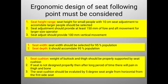Seat width should be selected on the basis of the 95th percentile population. Similarly, seat depth should also accommodate 95 percent of the population. The seat cushion is important for comfort — the weight of the buttock and thigh should be properly supported. The seat cushion should be evaluated at a 5-degree seat angle from horizontal at the front.